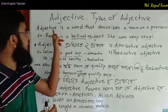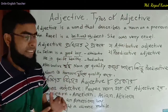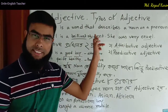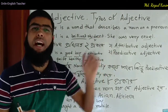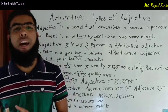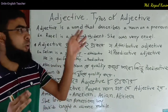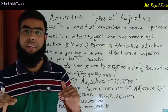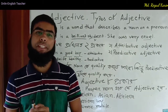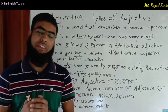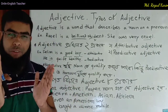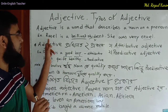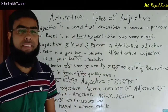An adjective is a word that describes a noun or a pronoun. It describes, qualifies, and indicates a noun or a pronoun. For example: Russell is a brilliant student.